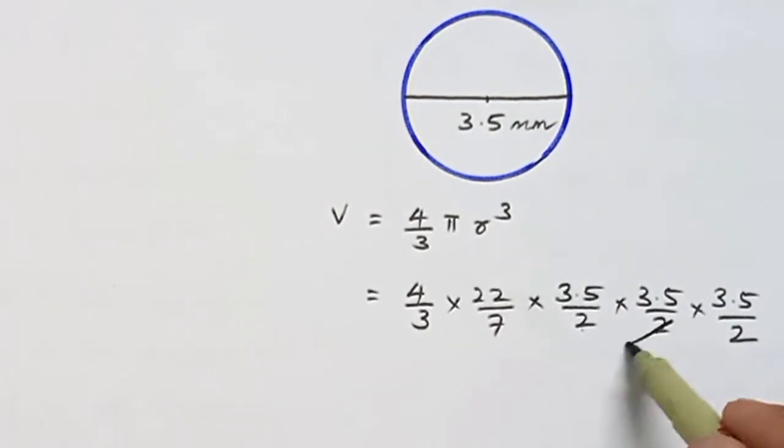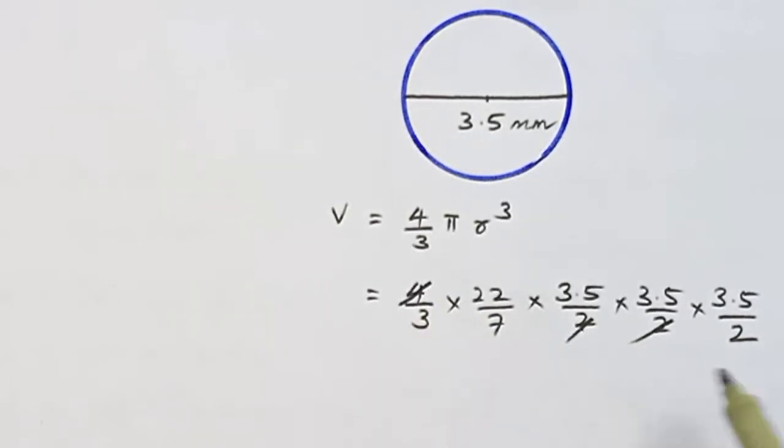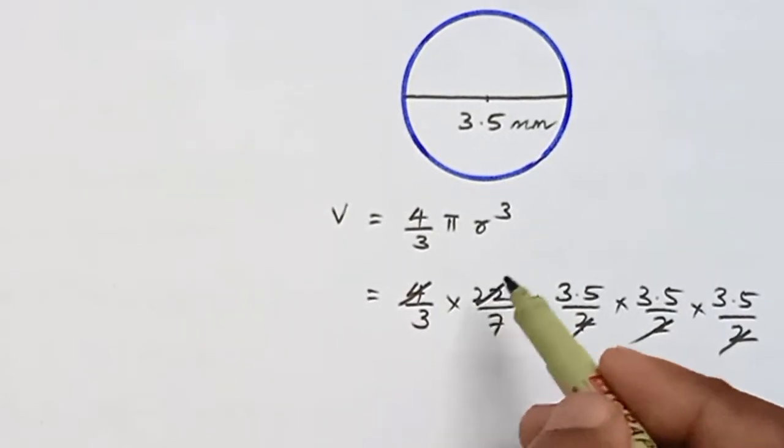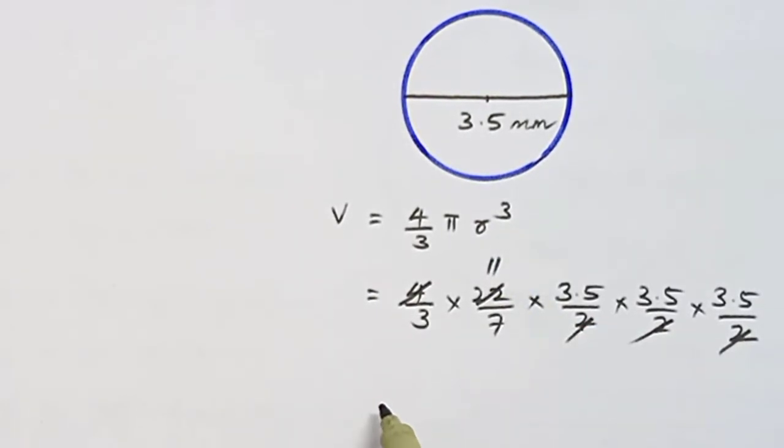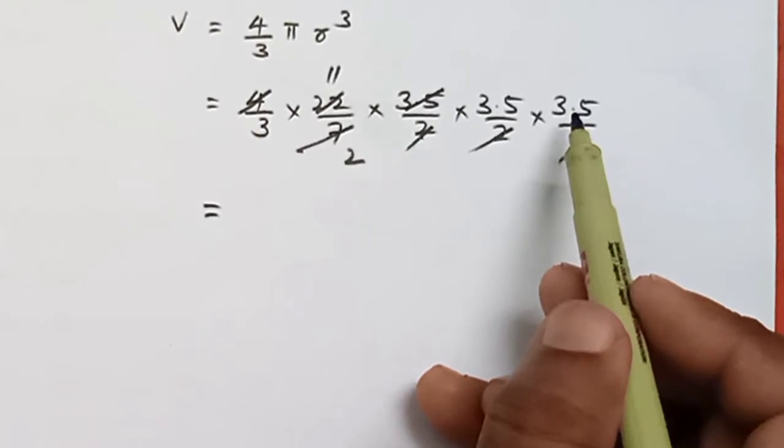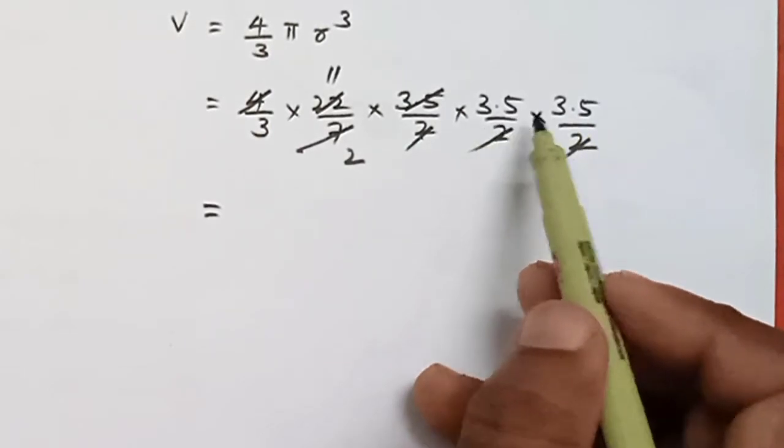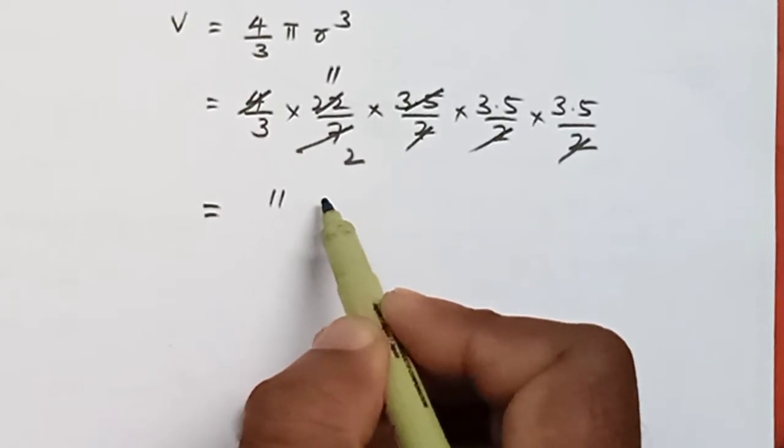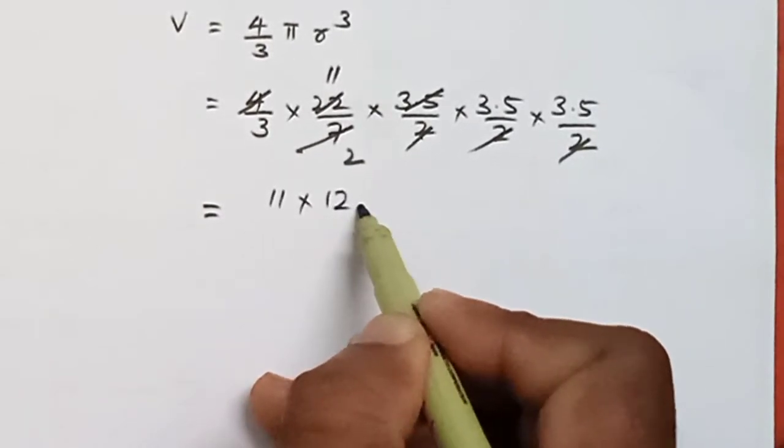2 times 2, 4 and 4 cancel. 2 times 22, 11. So 7 and 3.5 this will be 2. That is 35 times 35 is 1225. So 3.5 times 3.5 will be 12.25.